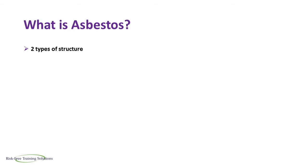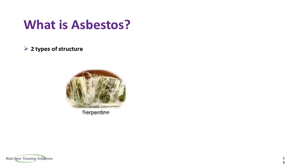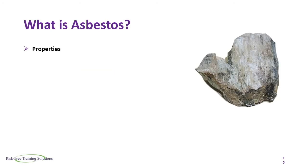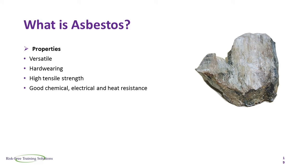There are two types of structure for asbestos: Serpentine and Amphibole. Asbestos is versatile, hard-wearing, high tensile in strength, has good chemical, electrical and heat resistance, and is mostly resistant to acids.